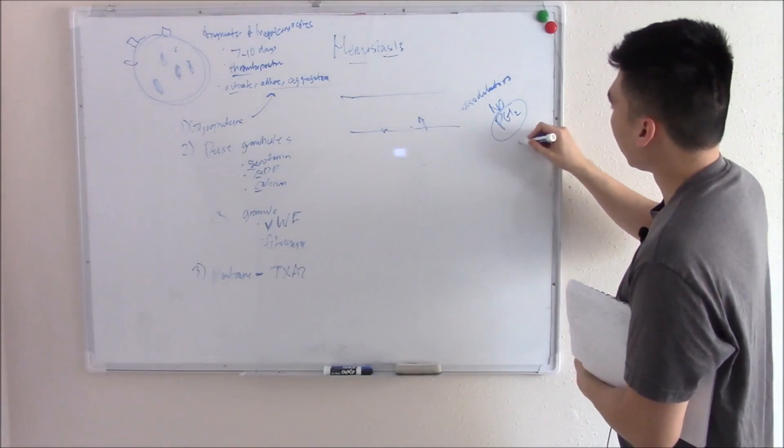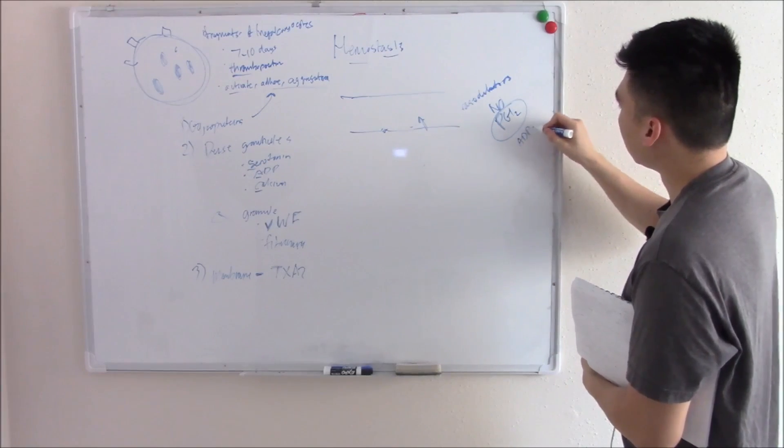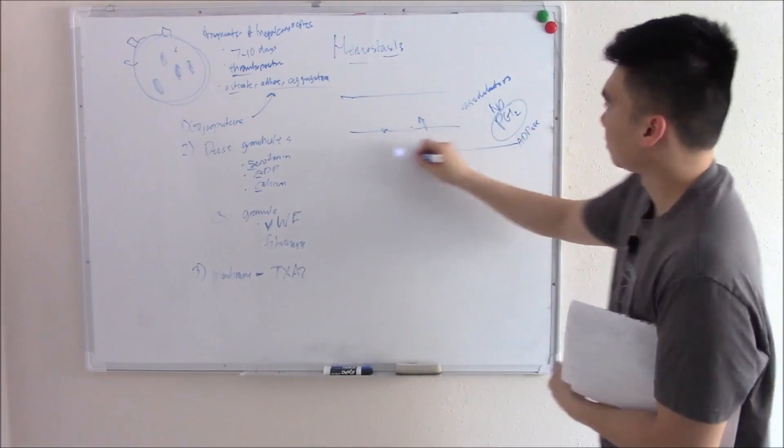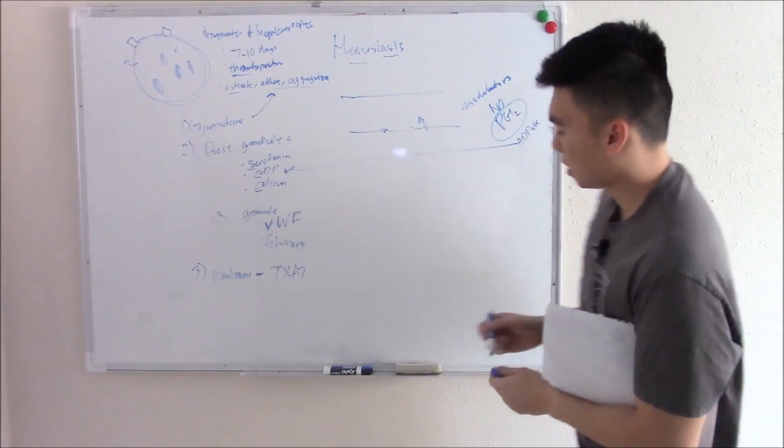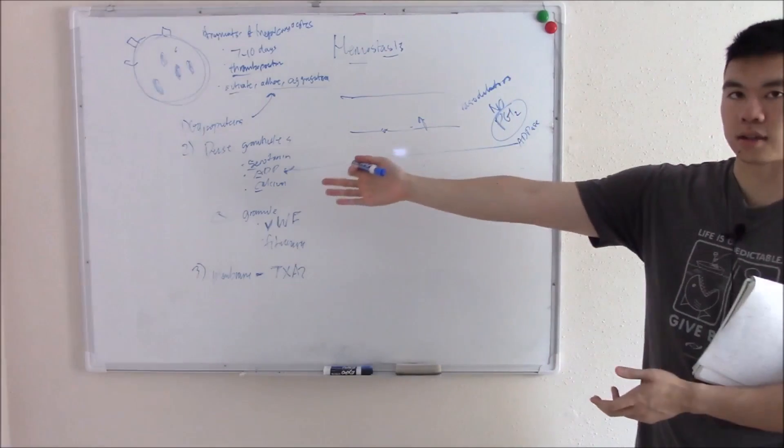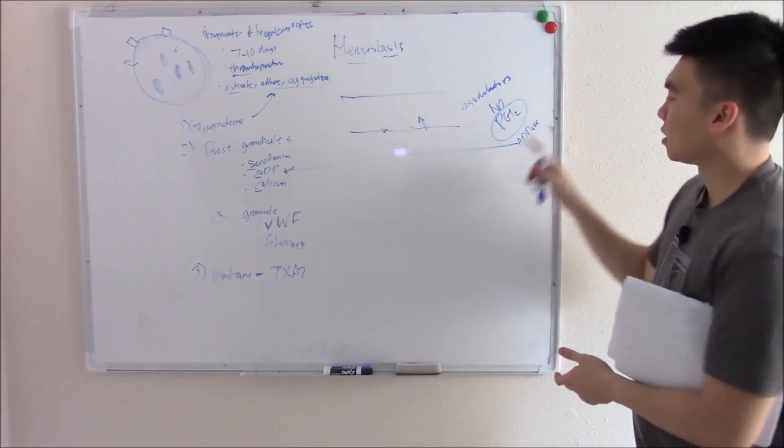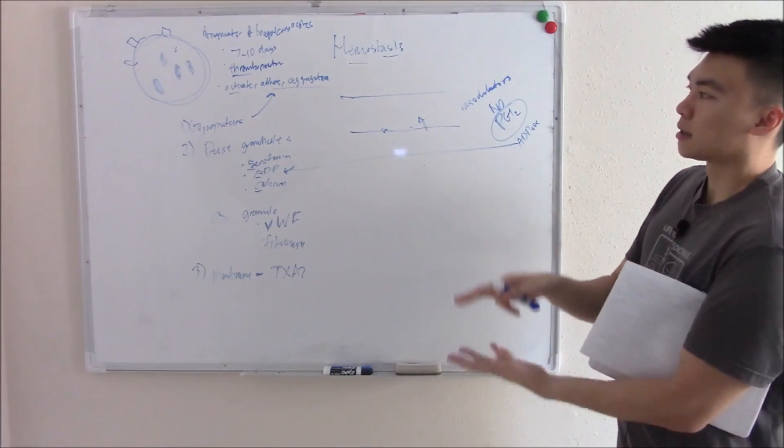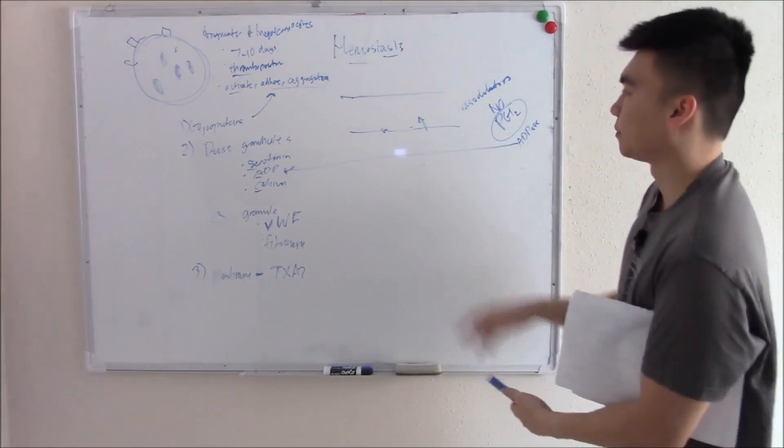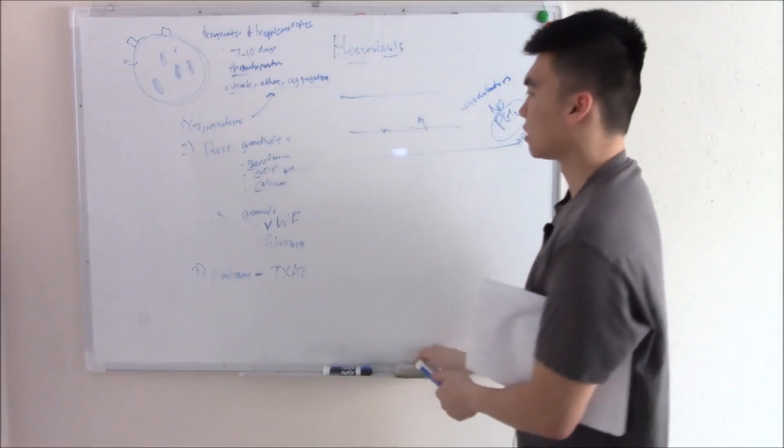And then ADPase, which breaks down ADP from our dense granules. We have things that basically stop our platelets from sticking in normal intact endothelium.